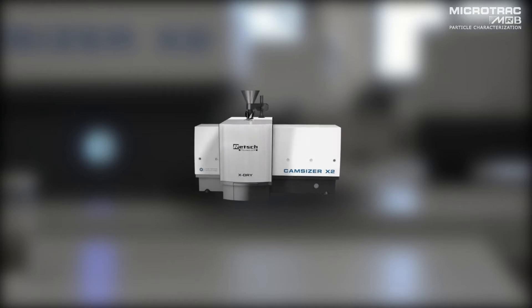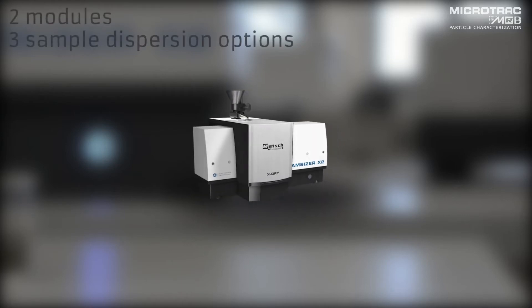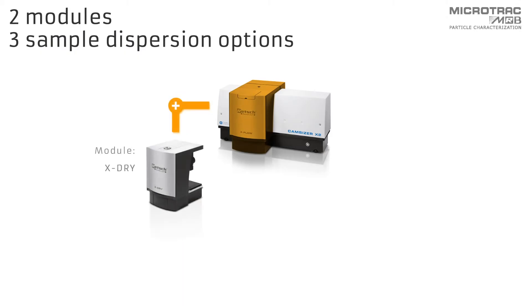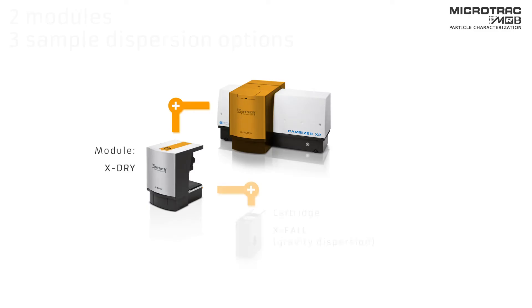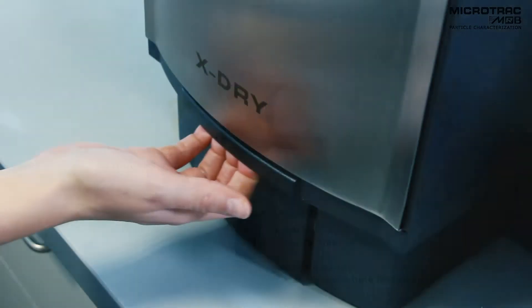The CamSizer X2 is suitable for measuring dry and wet samples, featuring two modules with three different sample dispersion options. The dry dispersion module X-dry can be equipped with two different cartridges. The gravity dispersion cartridge X-fall is used for pourable solids and free-flowing bulk materials.